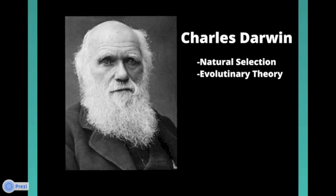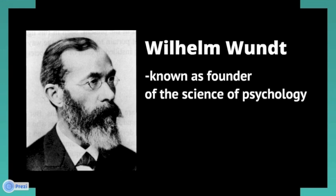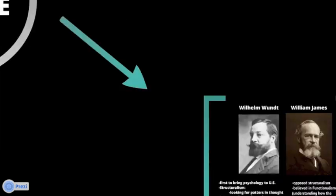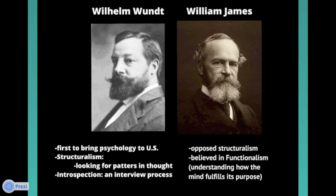Charles Darwin is known for natural selection and evolutionary theory. William Wundt is known as the founder of the science of psychology — he made psychology official as a science. William Wundt was the first to bring psychology to the U.S., and he focused on structuralism — looking for patterns in thought — through introspection and interview processes. William James was another American psychologist who opposed the beliefs of Wundt. He didn't believe in structuralism; he believed in functionalism, which was about understanding how the mind fulfills its purpose.